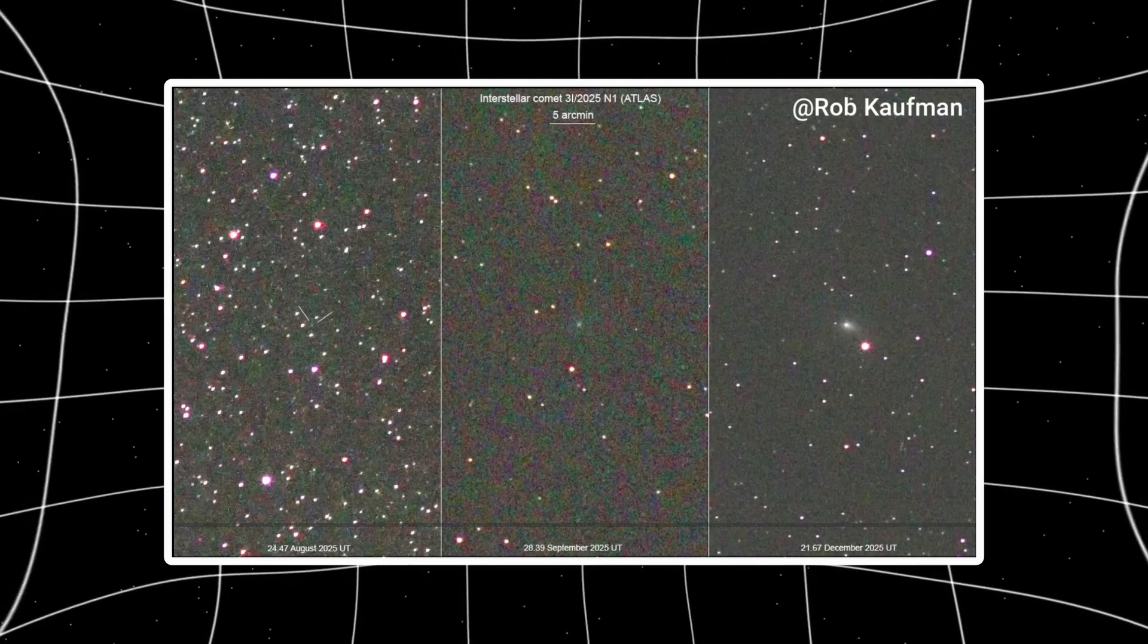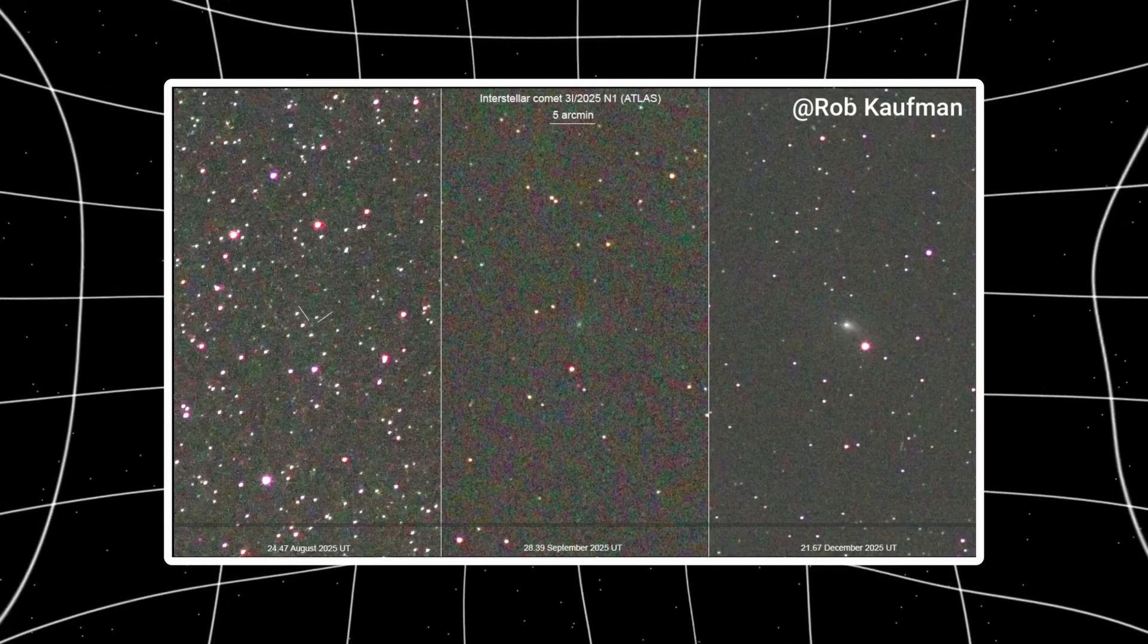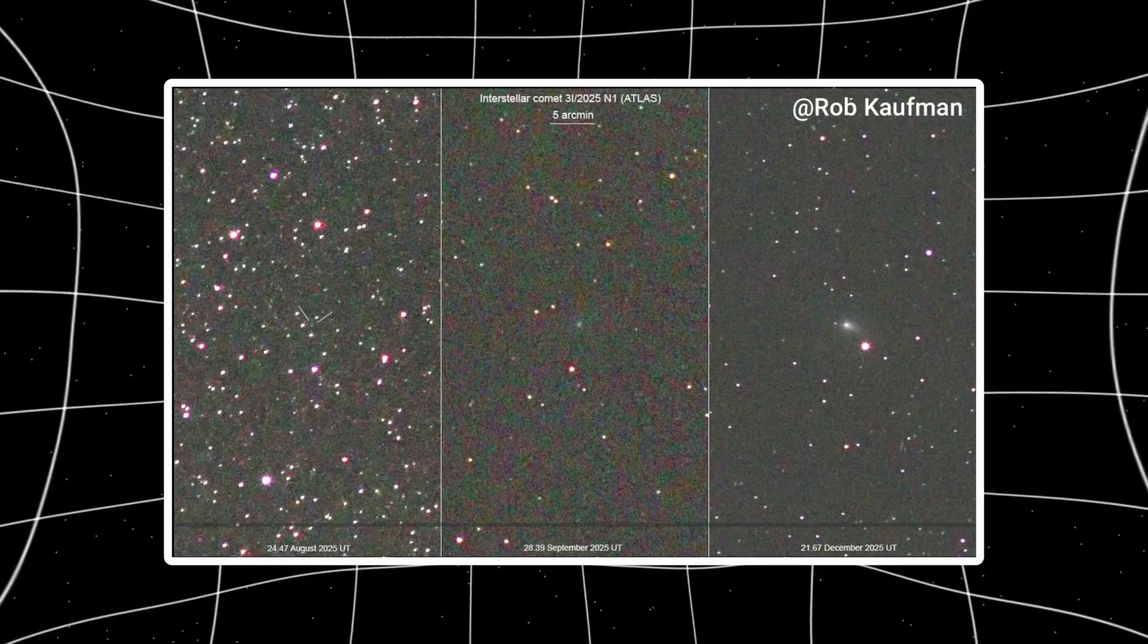But here's what doesn't happen. Fragmentation. Flares. Collapse into noise. The central condensation stays compact across all three dates. Even as brightness rises and falls, the shape holds. That's not typical comet behavior.